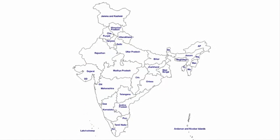The peninsula rivers either drain into the Bay of Bengal, which is on the eastern side, or into the Arabian Sea, which is on the western side. Keeping this in mind, we will first learn about the west flowing rivers.